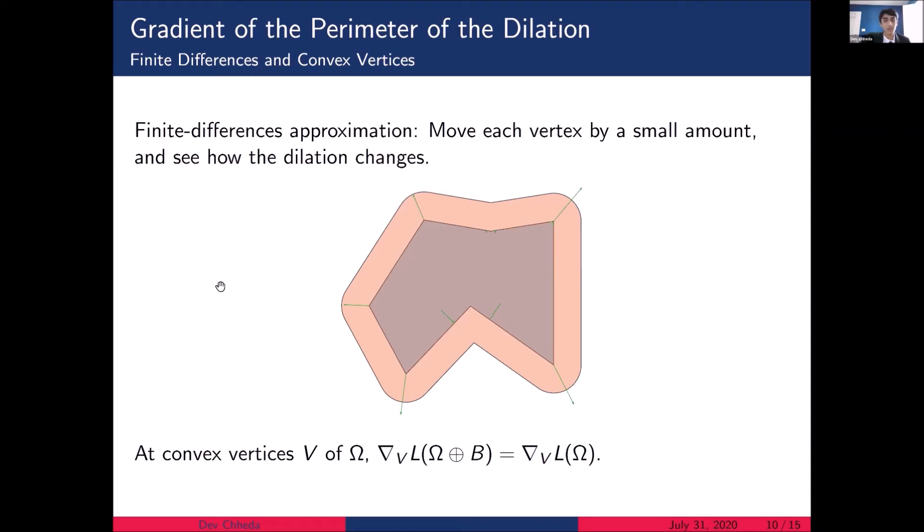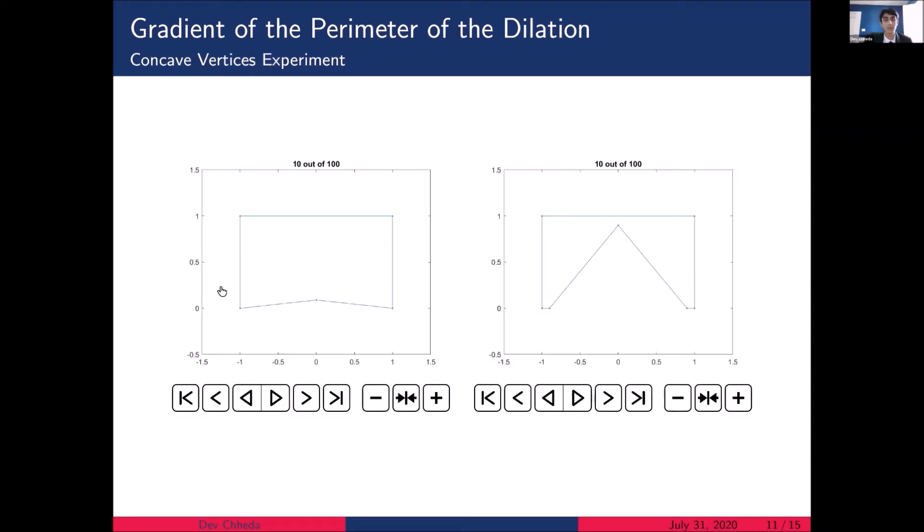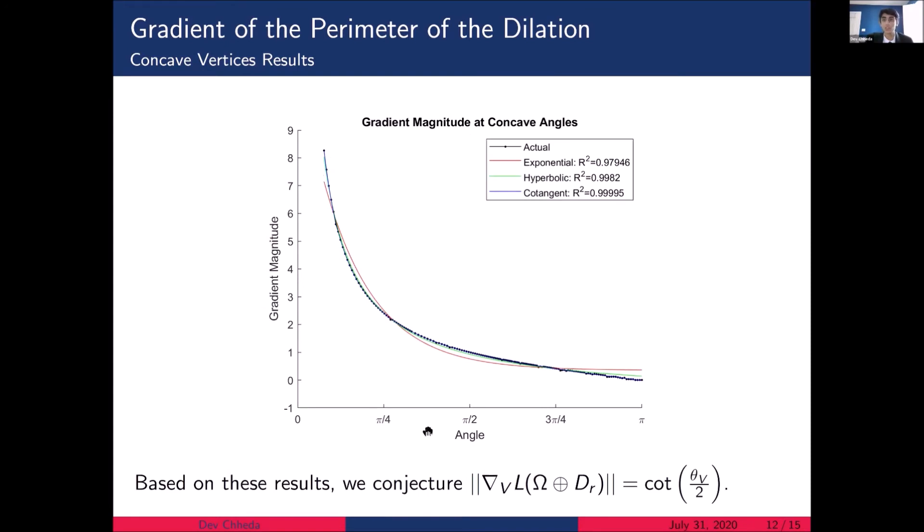However, we're not sure how to compute the gradient at concave vertices, and this leads us to employ a data-driven approach. So we simulate multiple concave angles, and we compute the magnitude of the gradient at each of these concave angles using the finite differences approximation, as you can see here. And when we plot out the gradient magnitude versus the angle, we find that a cotangent model captures this gradient magnitude nearly perfectly. Specifically, we conjecture that the magnitude of the gradient of the perimeter of the dilation is equal to cotangent of theta over 2, where theta is the convex angle at the concave vertex.